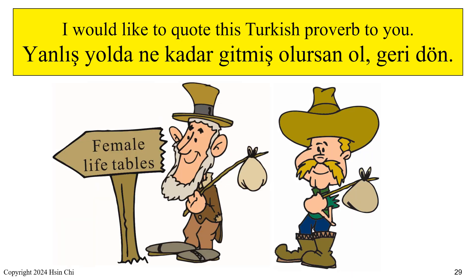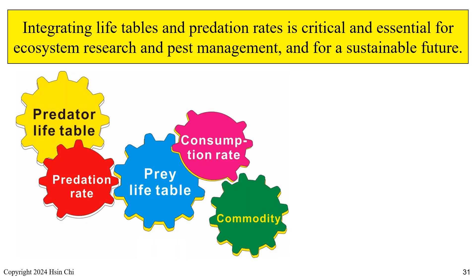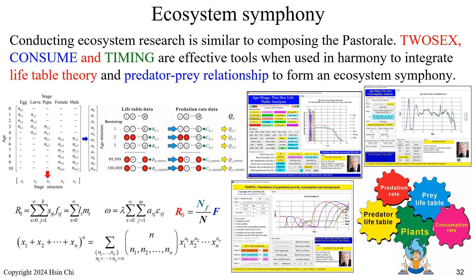I would like to quote this Turkish proverb to you: 'Yanlış yolda ne kadar gitmiş olursan ol, geri dön' — No matter how far you've gone down the wrong road, it's never too late to turn back. Integrating life tables and predation rates is crucial to ecosystem research and pest management, and for a sustainable future. Conducting ecosystem research is similar to composing the Pastorale. TWO-SEX, CONSUME, and TIMING are effective tools when used in harmony to integrate life table theory and predator-prey relationships to form an ecosystem symphony.